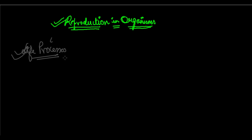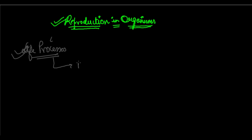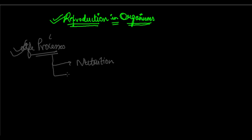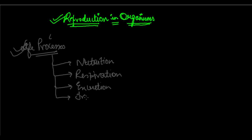We learned why they were fundamental, and we looked at various life processes such as nutrition, respiration, excretion, and transportation. And after that, in a separate chapter, we also looked at control and coordination.